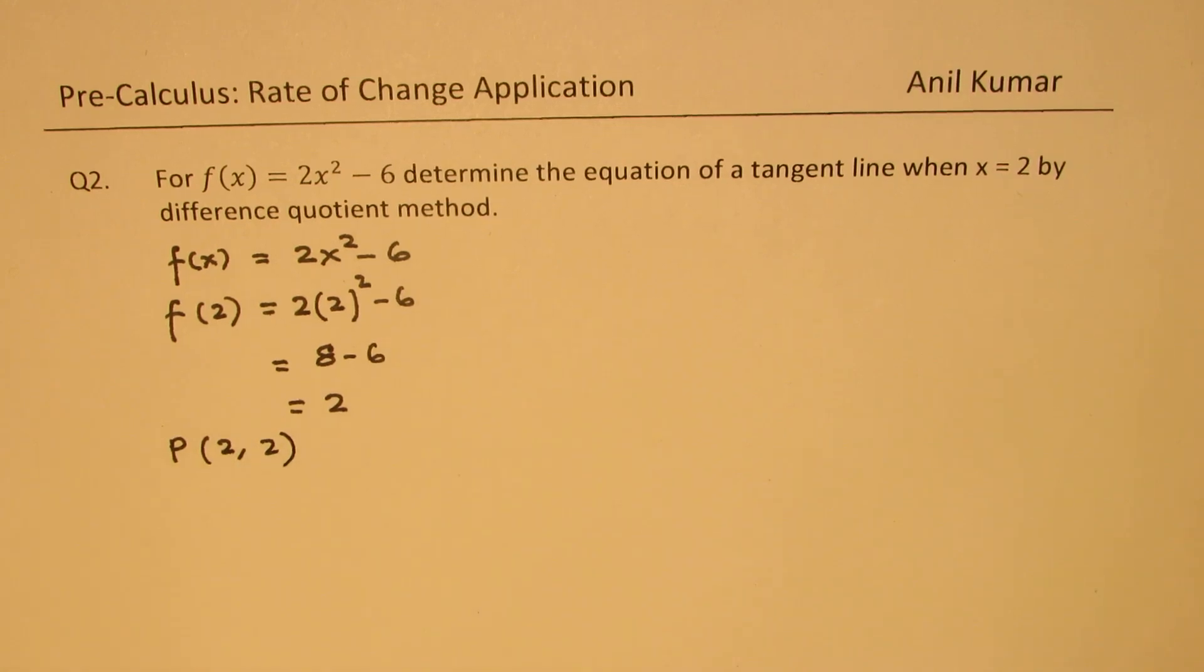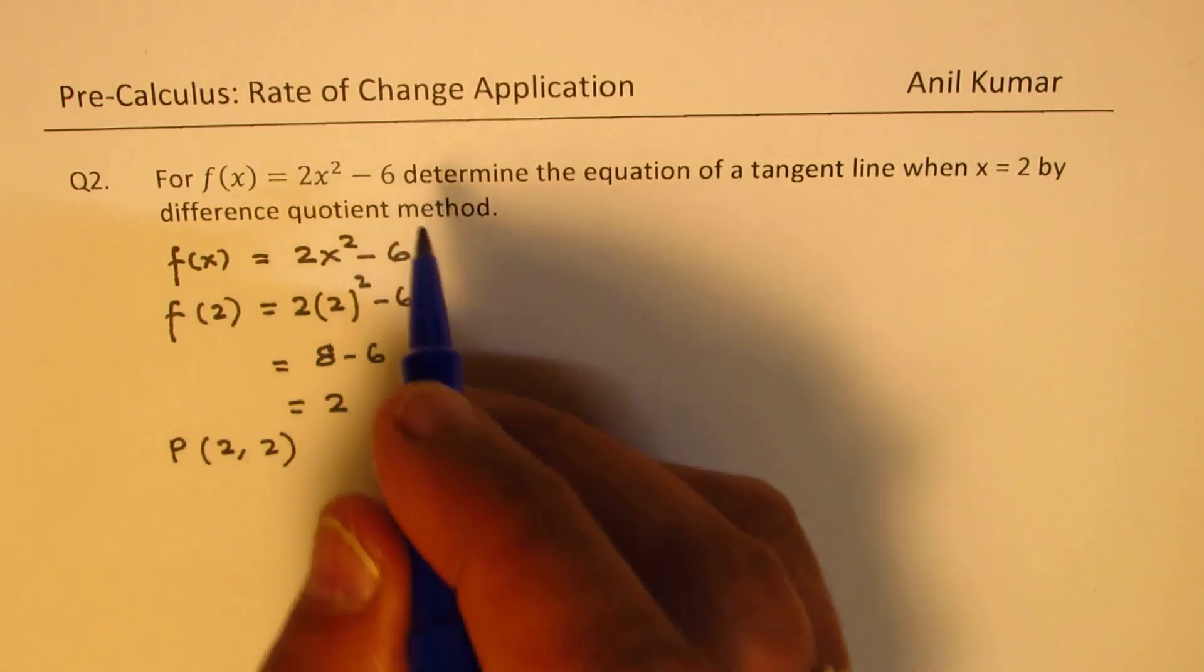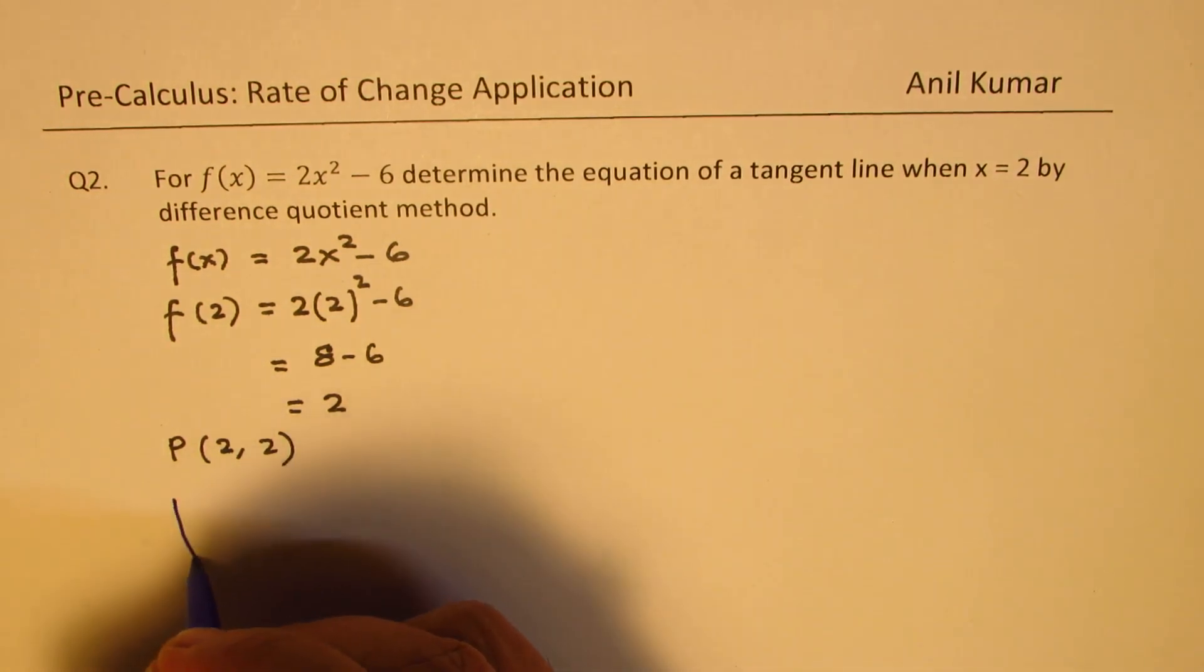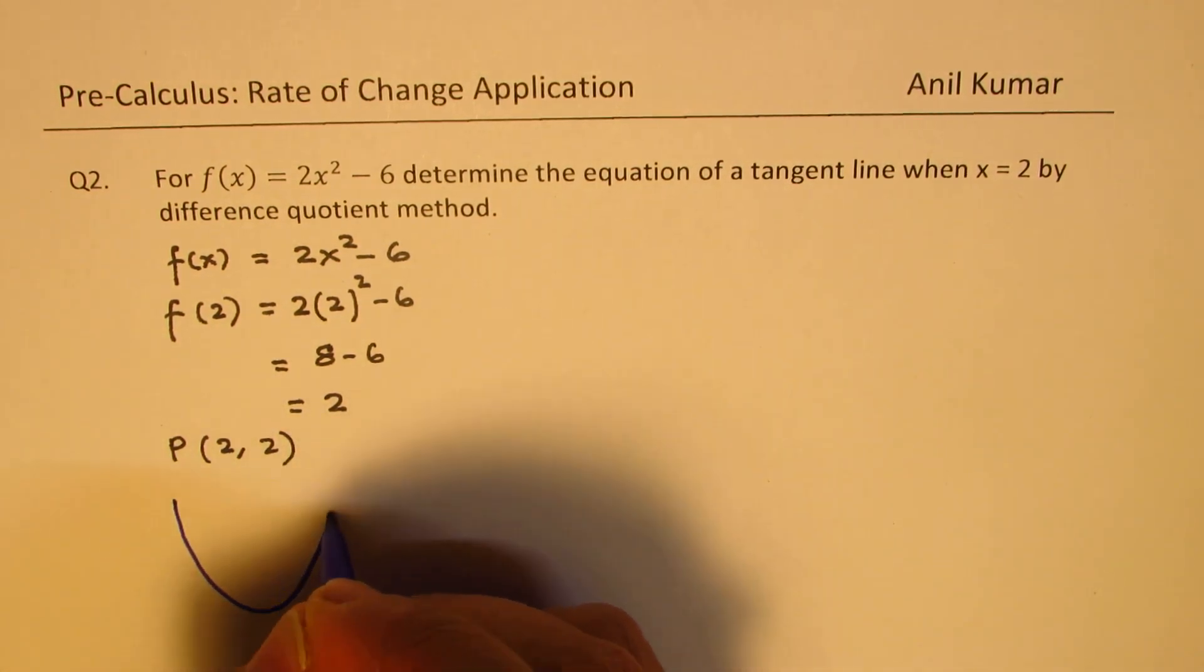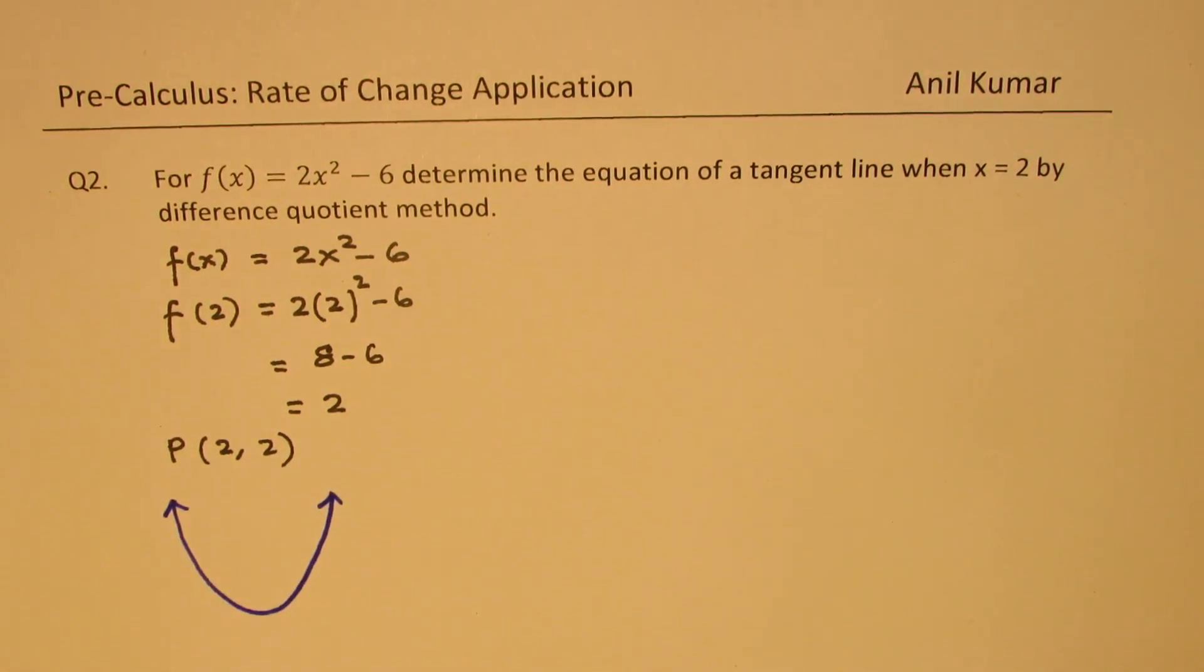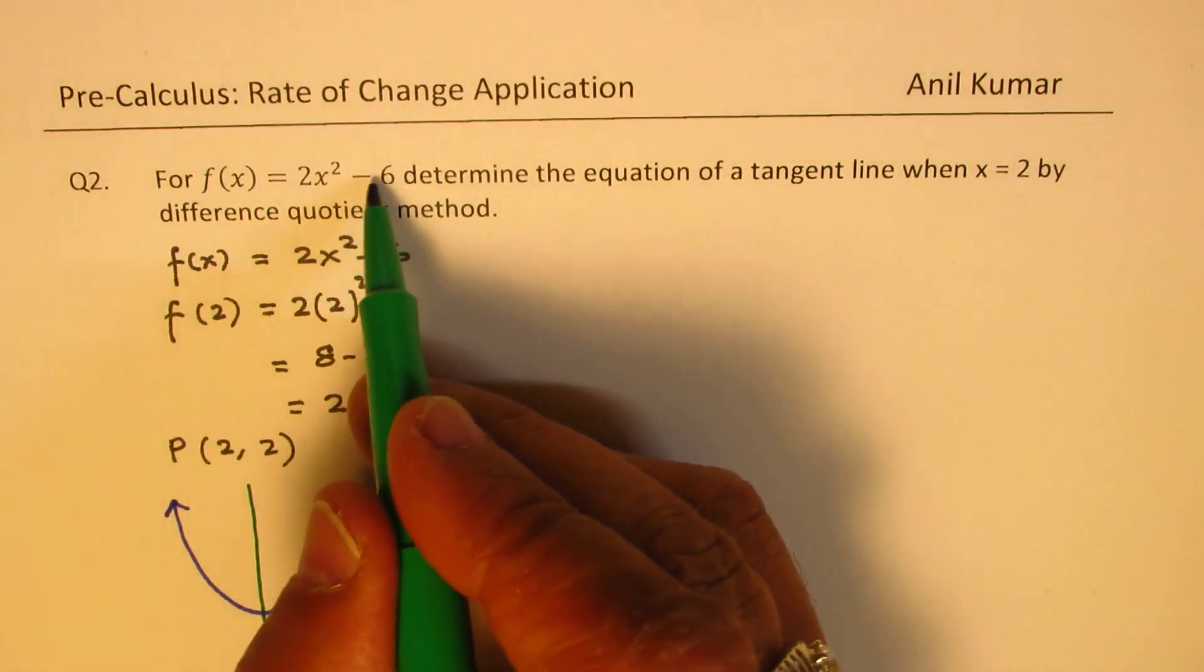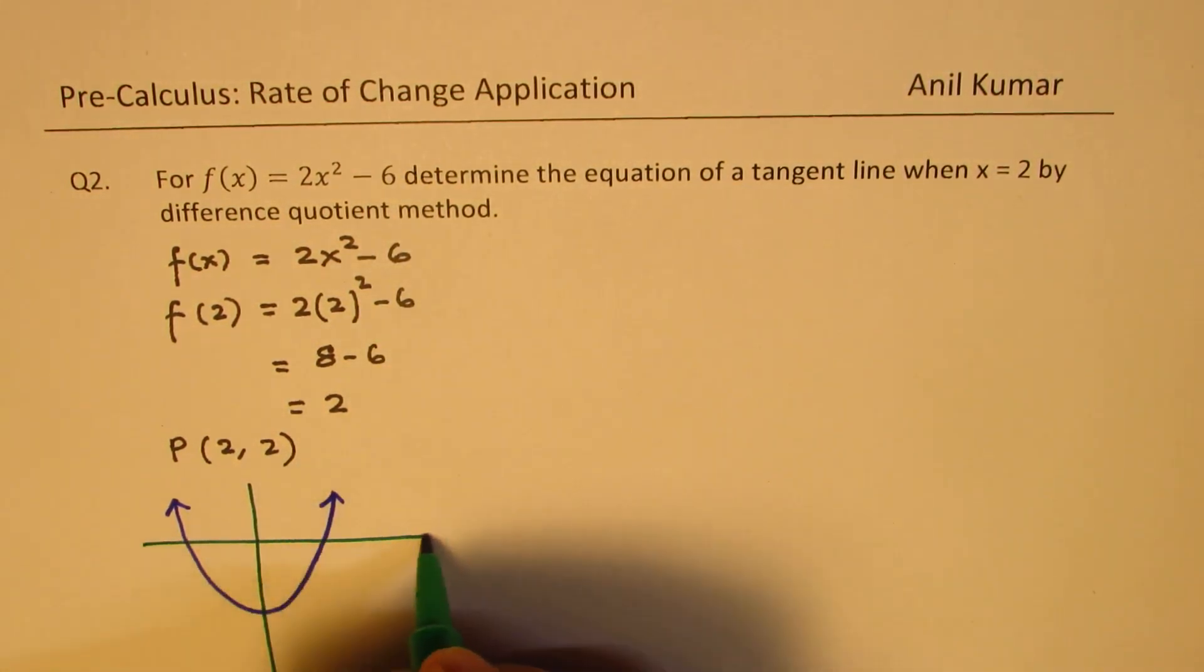So basically what we have here is a parabola which is opening upwards. I'm not drawing any axis here. And we do have a point 2. You can actually draw the axis also, since it's a very simple function to sketch. It's a parabola which has gone six steps down.